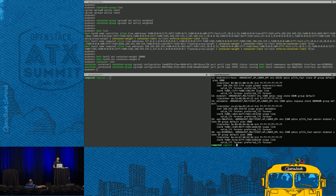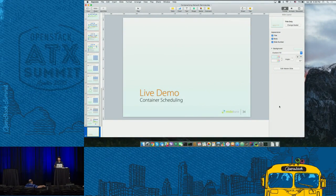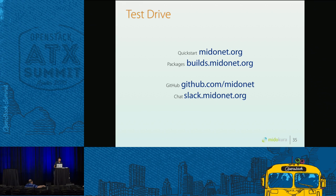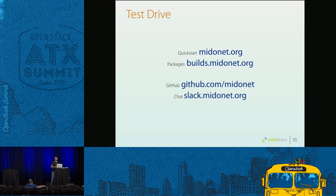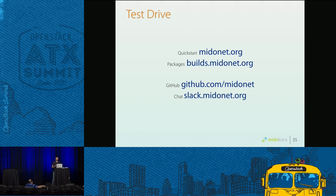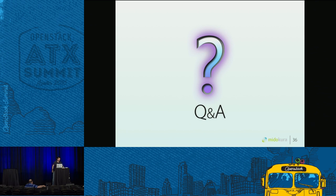There are many other policies we could think of — we've only implemented two so far due to time constraints. If you want to try it, everything in this release is open source. You can set up your own OpenStack environment using the quickstart at midokura.org — it's a script you download and run. For release 5.1 you'll need to download and install packages from builds.midokura.org. If you run into any problems, reach us on Slack and we'll try to answer. Now I'm open to questions.